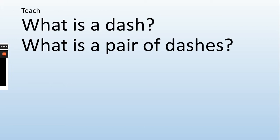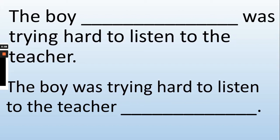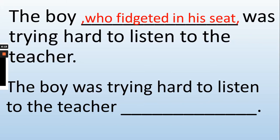A dash or dashes — for parenthesis, a dash can work on its own or can be embedded with a pair of dashes. Let's have a look at them at work. Main clause: 'The boy was trying hard to listen to the teacher.' With a pair of commas: 'The boy, who fidgeted in his seat, was trying hard to listen to the teacher.' With a pair of dashes: 'The boy — who fidgeted in his seat — was trying hard to listen to the teacher.' With brackets: 'The boy (who fidgeted in his seat) was trying hard to listen to the teacher.'